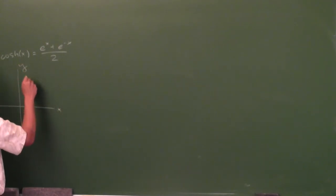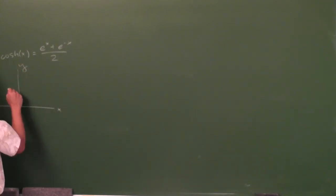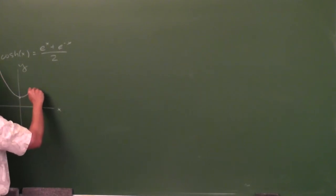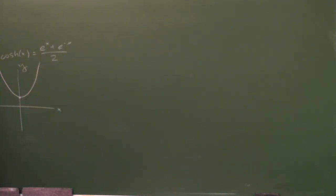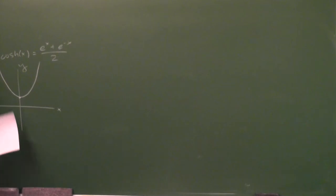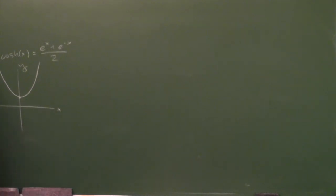So if you graphed it, it should look something like this. Here's 0, 0, 1. Did you guys get something like that? And what's the significance of this graph in physics? Who's in physics right now? Karamoto, redeem yourself from yesterday.